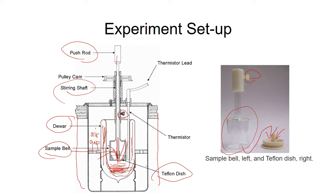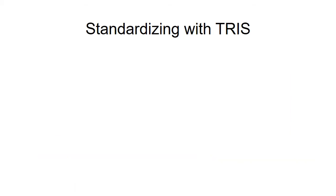The temperature is measured by a thermistor. Similar to the bomb calorimeter experiment, we first need to calibrate the calorimeter to find the heat capacity. Since the reaction is done at constant pressure, the heat capacity is CP.